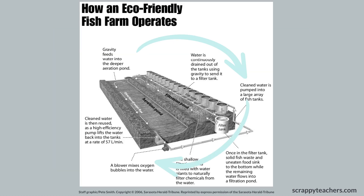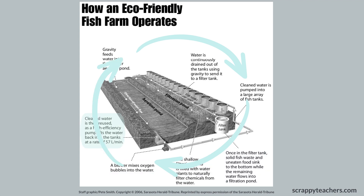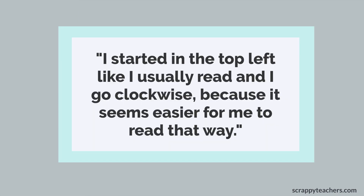Almost half of the students read in a clockwise fashion, as you can see here. It's a good strategy for cyclical graphical text like the water cycle, but not here, because this strategy meant that the box information was read out of sequence. In the words of one student: "I started in the top left like I usually read and I go clockwise because it seems easier for me to read that way."